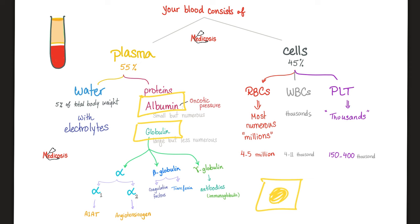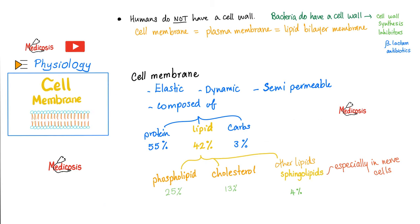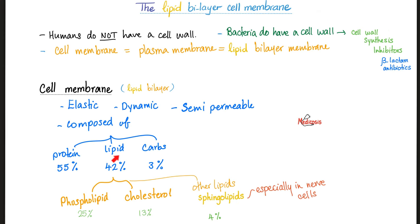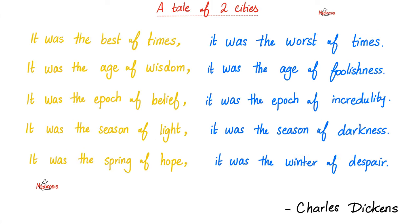Which protein is more abundant? Albumin. Which is bigger? Globulin. The plasma is water, but the cell membrane is a lipid bilayer made of all kinds of lipids — phospholipids, cholesterol, and sphingolipids.